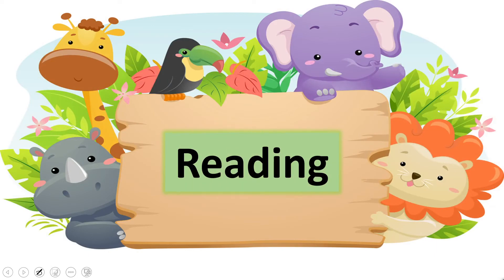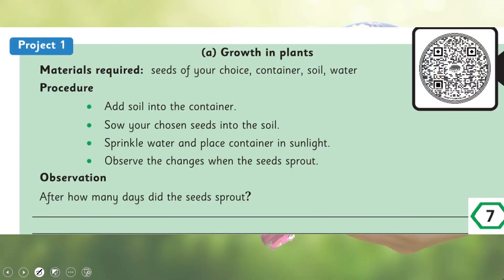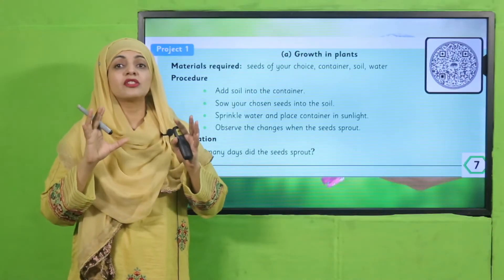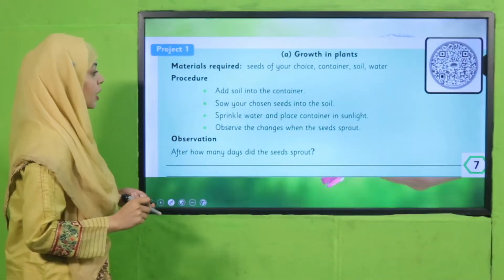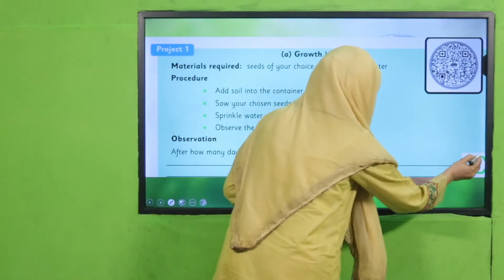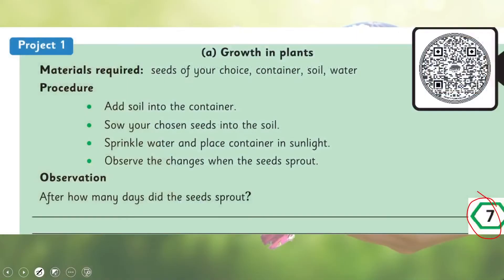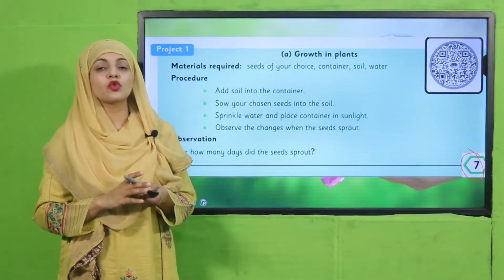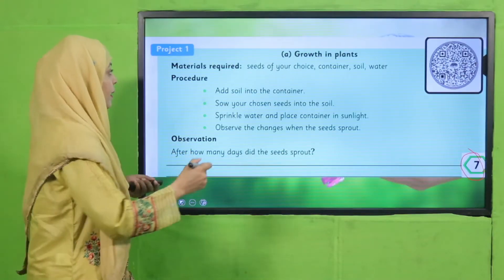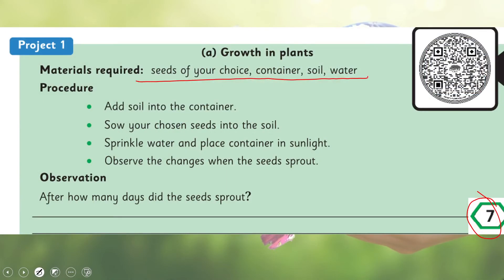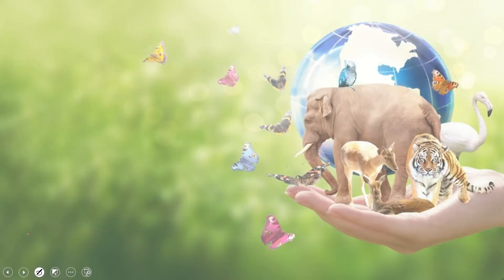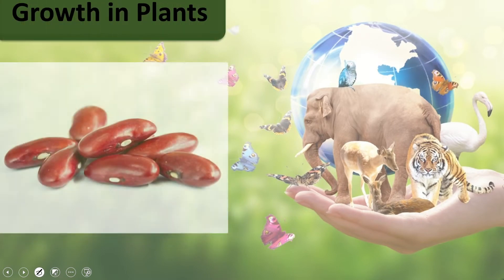Now let's look at the instructions for the project. Open page number seven in your books. The materials required are: seeds of your choice, containers, soil, and water. For the procedure, we will add soil, sow the seeds, sprinkle water, then observe different changes and record observations in your book.